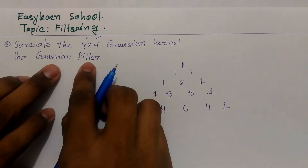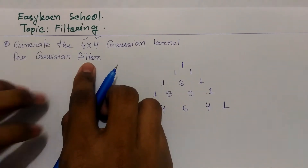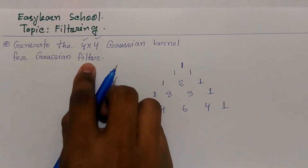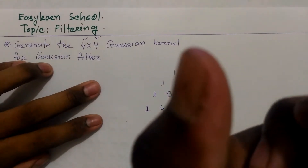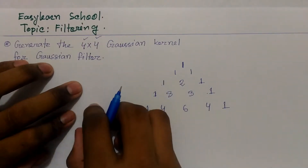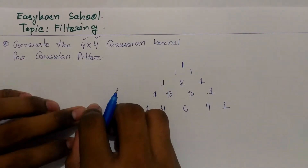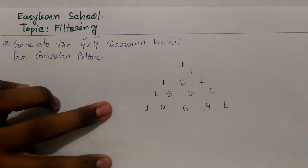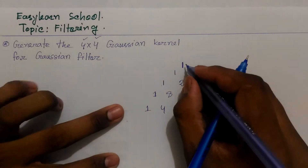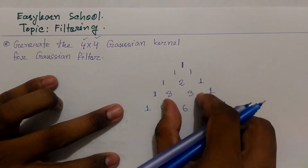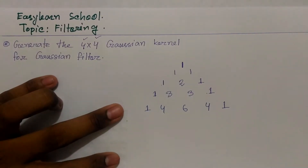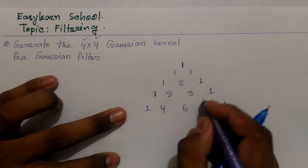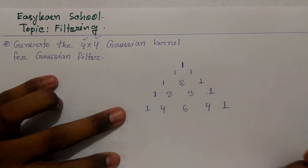If we use a Gaussian filter, we can find out the kernel. We can find out the binomial coefficients, and we can find out the pyramid structure for the 4x4 Gaussian kernel.